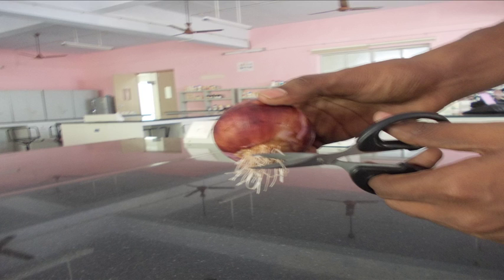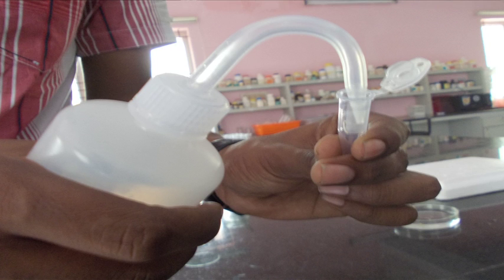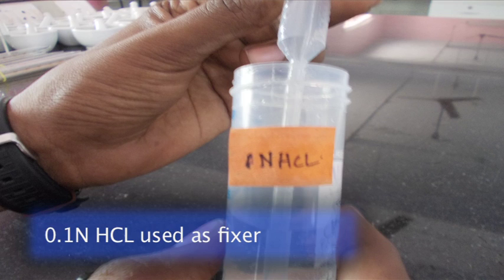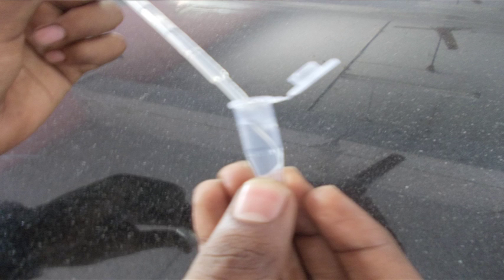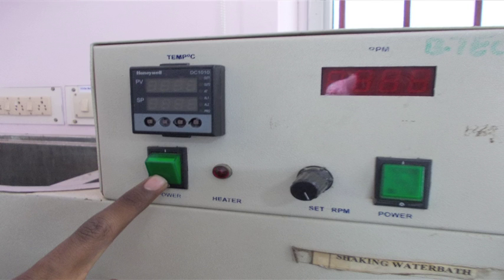Using scissors, take a newly sprouted root and place it in the Eppendorf tube. Using the forceps, clean the root tip using distilled water. Add one drop HCL into the tube using the dropper. Close the tube and place it in a floater and keep it incubated in a 60 degree Celsius water bath for 12 minutes.